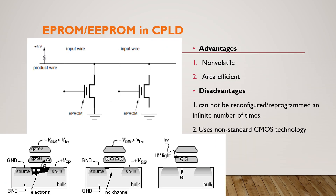The next technology is EEPROM as well as EPROM used in complex programmable logic devices. It is non-volatile. The programming in EEPROM is as follows: this is the symbol of an EEPROM device — the two lines indicate two gates. The first is the control gate, and the second is called the floating gate. So it is called a floating gate MOS transistor.